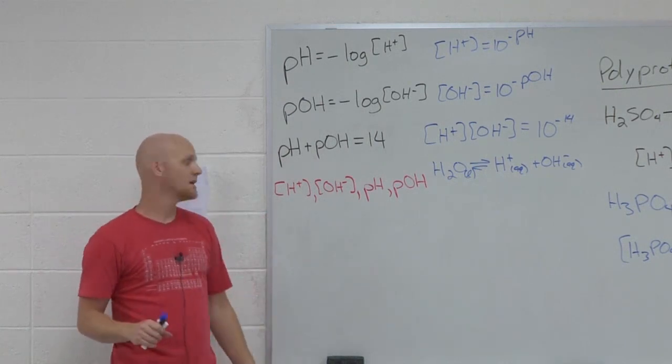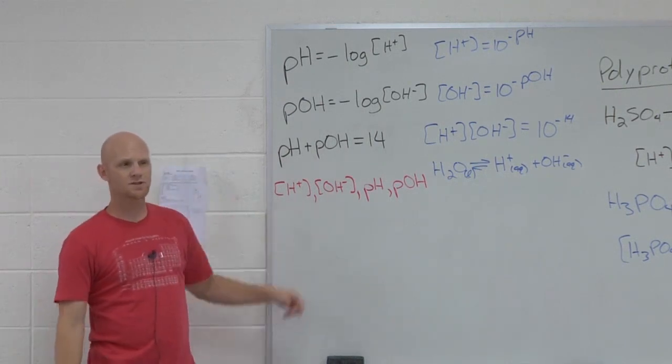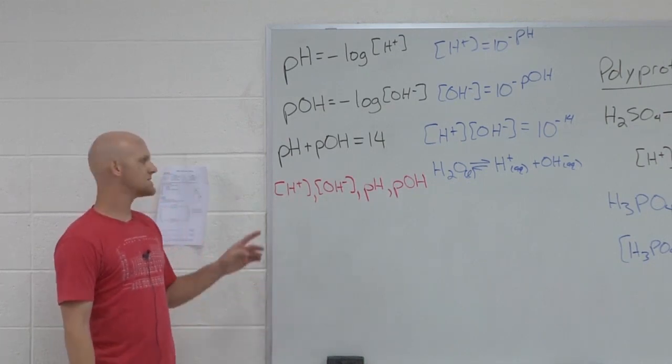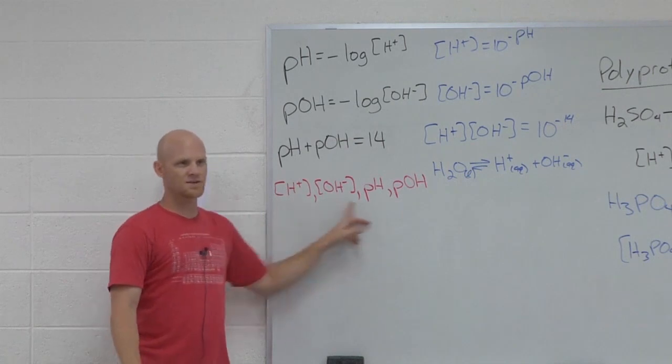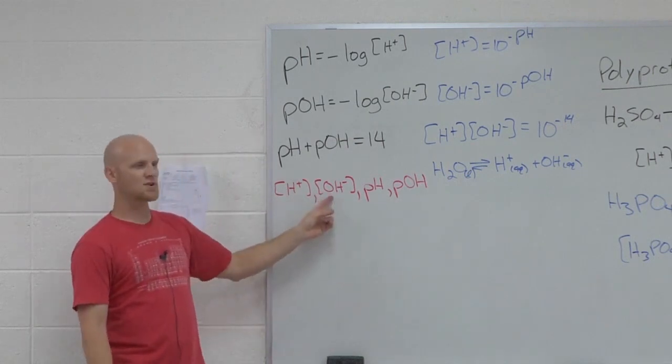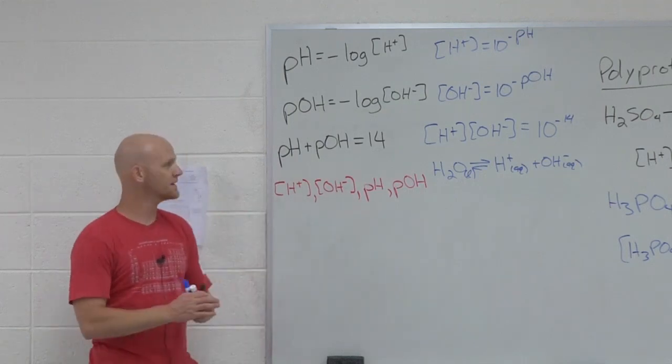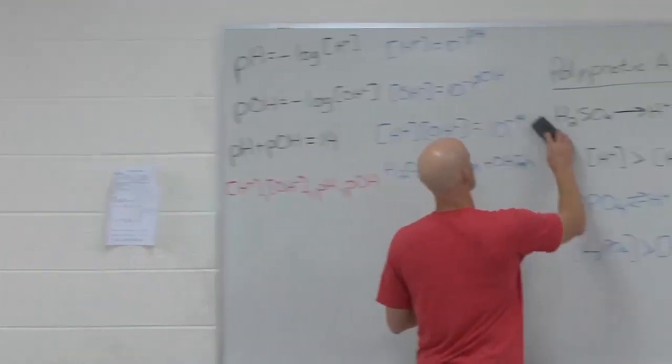So if in a question I say I want you to solve for OH concentration, you shouldn't look at that and say, how do I get OH? You should look at that and say, how do I get any one of these? Because once I'm able to get any one of these, then I can turn it into OH. Because once you know one of these, you should be able to calculate the other three. Let's take a look at how this works.